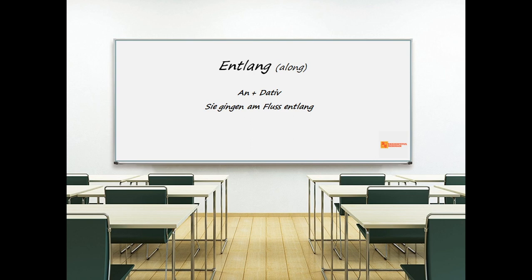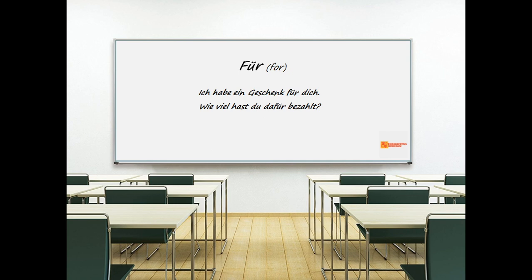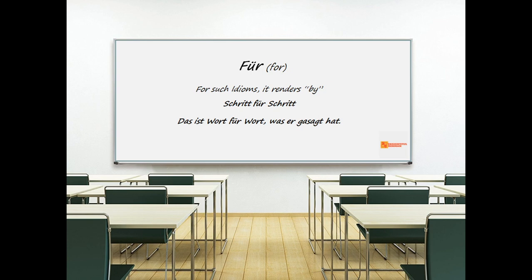Next, 'für', which means 'for'. 'Für' nearly always equates to 'for': 'Ich hab ein Geschenk für dich' — I have a gift for you. 'Wie viel hast du dafür bezahlt?' In idioms, 'für' renders 'by': 'Schritt für Schritt' — step by step. 'Das ist Wort für Wort was er gesagt hat' — that is word for word what he said.